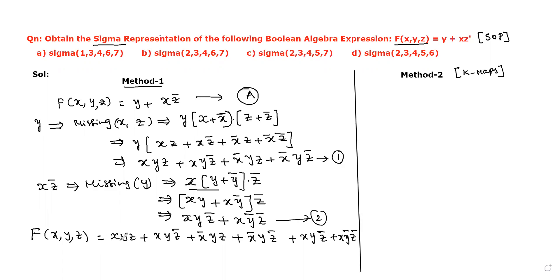Now we assign binary values to each product. For xyz: x is normal form so its value is 1, y is 1, z is 1. For xyz': x=1, y=1, z'=0. For x'yz: x'=0, y=1, z=1. For x'yz': x'=0, y=1, z=0. For xyz': x=1, y=1, z=0. For xy'z': x=1, y'=0, z'=0.